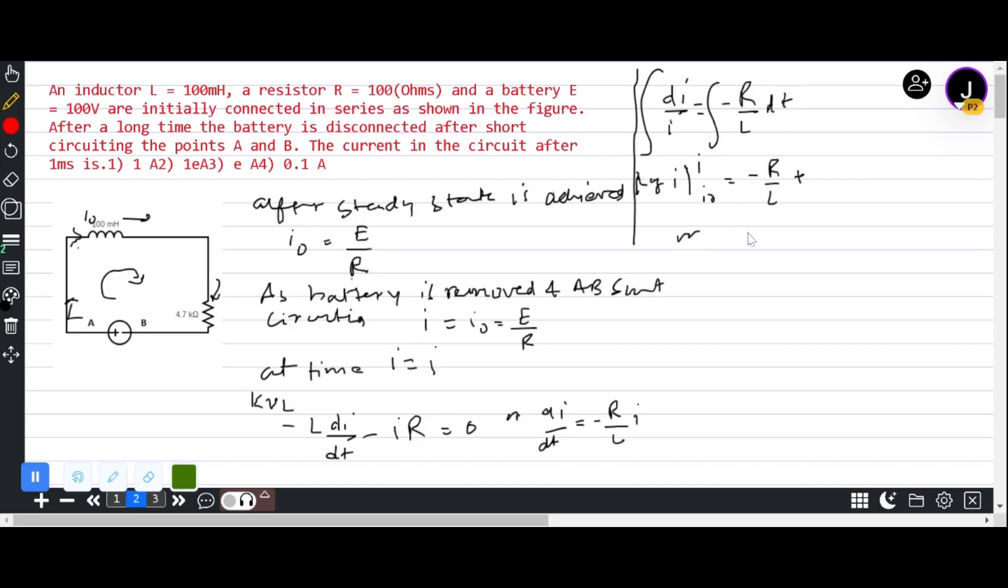Now taking the antilog, i equals i₀ times e to the power minus RT by L, which is the RL circuit equation.